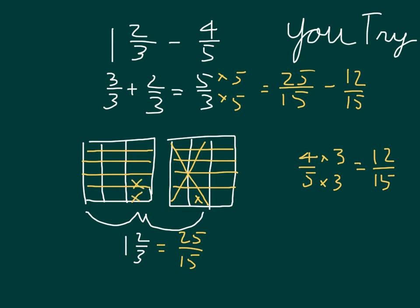Counting up what we have remaining. We'll have 5 there. 10 fifteenths, 11, 12, and 13 fifteenths is our final answer. So 1 and 2 thirds minus 4 fifths equals 13 fifteenths. Here's our numbers that show our work. And here's our picture representation of what's going on.